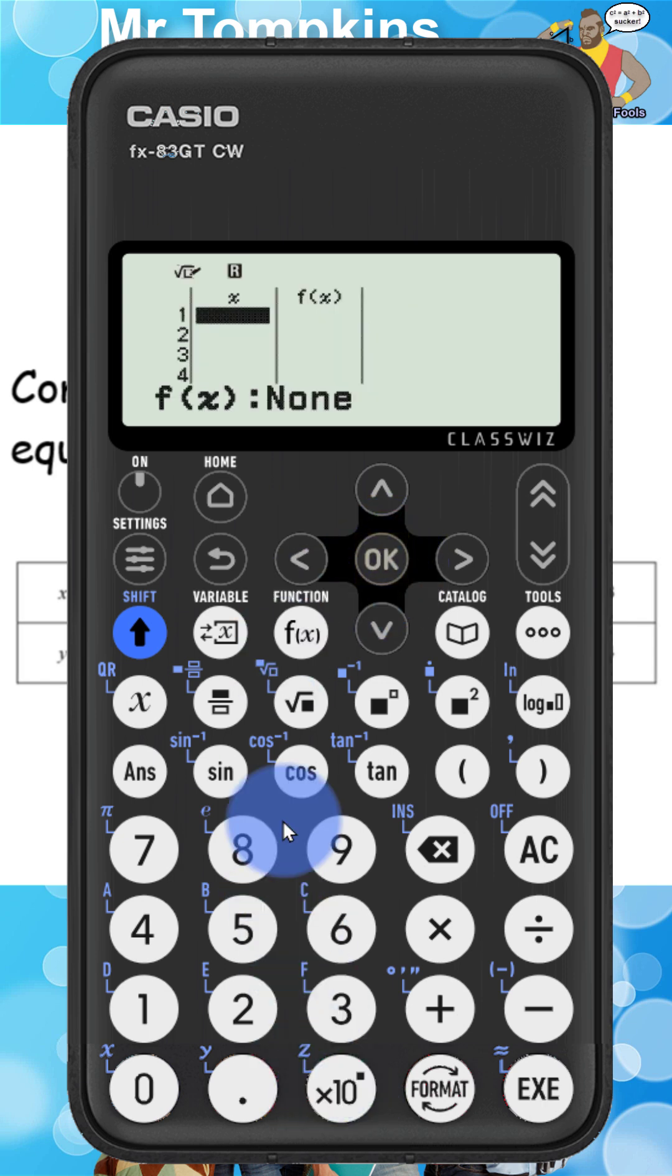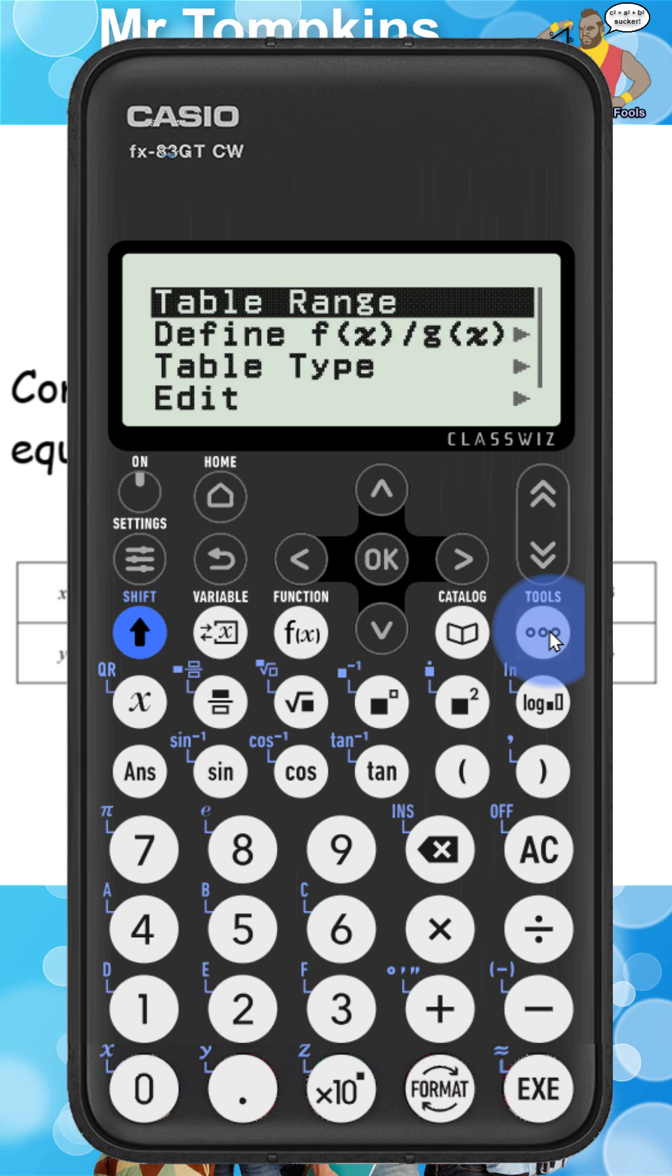You can see I've been taken straight into the table this time but it's blank and it says f of x none. So we need to type in the function and we do that by pressing the tools button here which has got three dots and you can see it says table range.